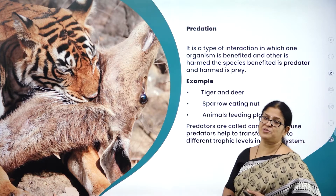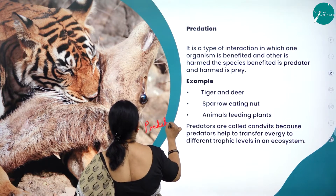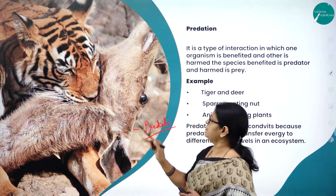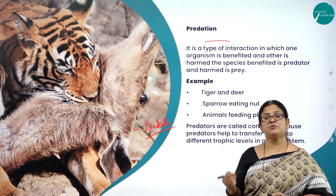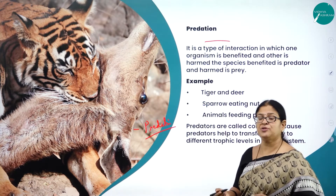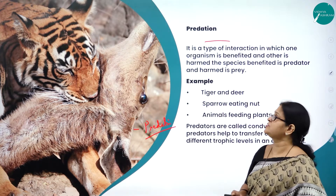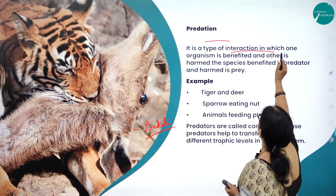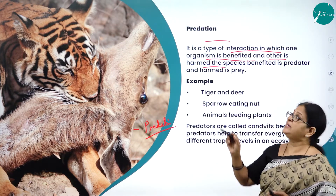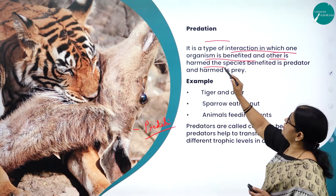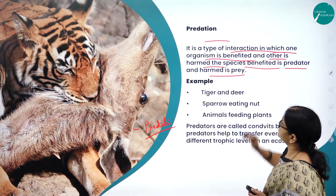Here you can see in this beautiful picture the example of predation — a very important population interaction between a tiger and a deer. Predation is a type of interaction in which one organism is benefited and the other is harmed. The species benefited is called the predator and the one which is harmed is the prey.